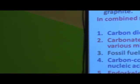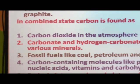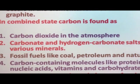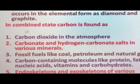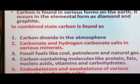Today we will discuss about one such important biogeochemical cycle — the carbon cycle. Carbon is found in various forms on the earth. It is a very important element. It occurs in the elemental form as diamond and graphite, which are allotropes of carbon. Diamond is the hardest substance and graphite is used in many processes.